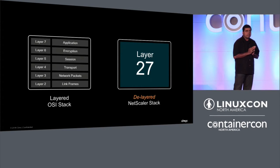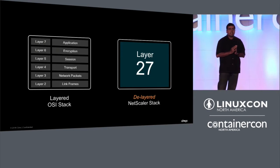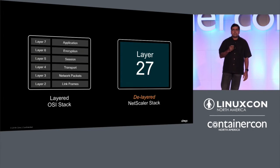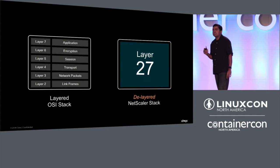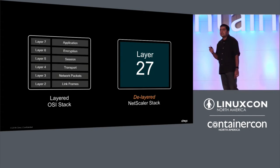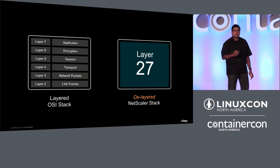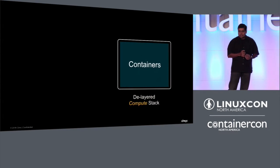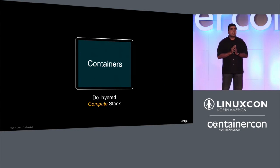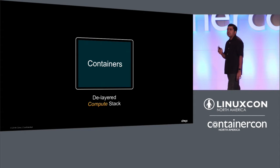In return for having fused those layers together — for having de-layered that traditional TCP/IP stack — what we got was the world's fastest layer 2 to 7 proxy. This is 100% software and, cycle for cycle, it is the fastest proxy out there today. I see similar de-layering happening at the compute layer, and containers play a big part of that.